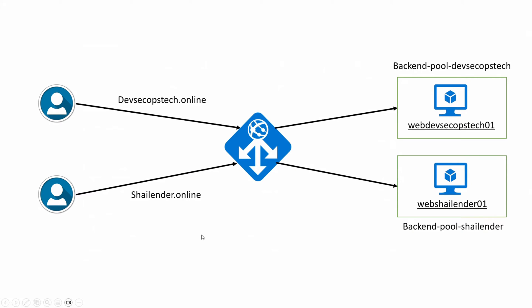In this lab I am using two different domains: DevSecOpsTech.Online and Shalender.Online. I have registered these two domains in GoDaddy and will be using them as DNS zones in Azure. There are two web servers created for this lab — one will cater traffic for DevSecOpsTech.Online and the other for Shalender.Online. Both web servers will be placed in separate backend pools, and using routing rules in the application gateway, traffic for each website will go to its respective backend pool.